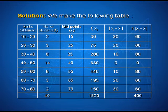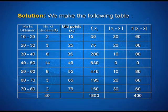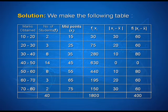Then we find the product of f_i and the absolute value of x_i minus x-bar: 2 into 30 gives us 60, 3 into 20 gives us 60, 8 into 10 gives us 80, 14 into 0 is 0, 8 into 10 is 80, 3 into 20 is 60, and 2 into 30 is 60. On adding these, the total product is 400.